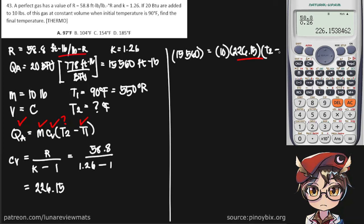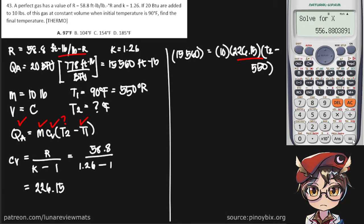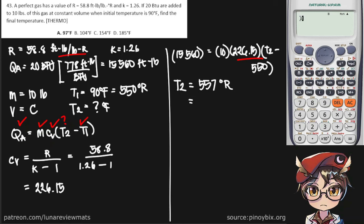So the equation becomes: 15,560 equals 10 times 226.15 times T2 minus 550 Rankine. Solving in our calculator, we get a final temperature of approximately 557 degrees Rankine. Converting that into Fahrenheit, we get 97 degrees Fahrenheit as our final answer.